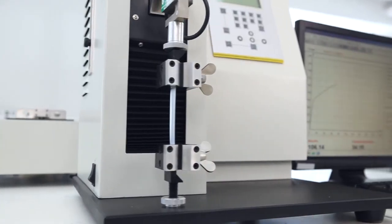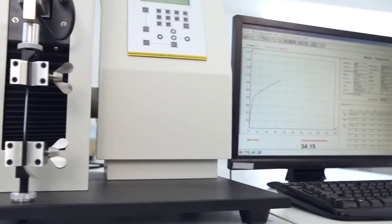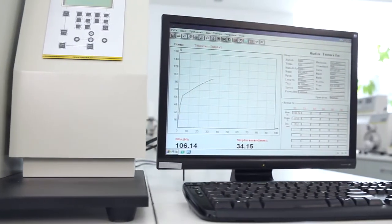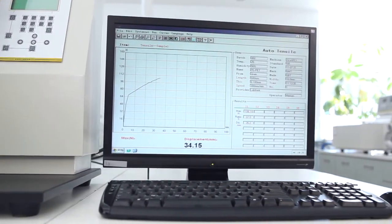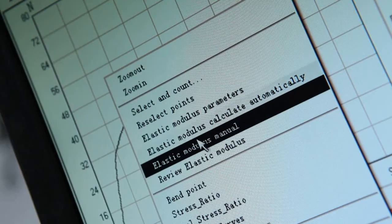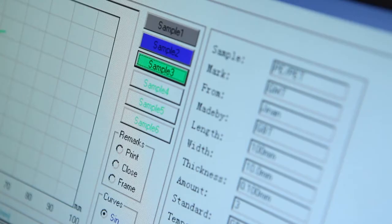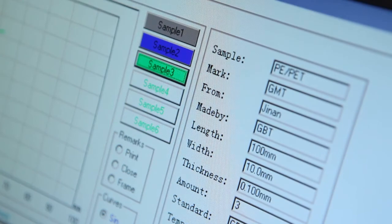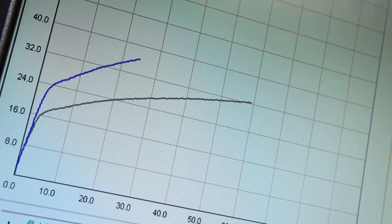The testing software designed by LabThink has an intuitive operation interface, visual display of real-time data and graphs. It can calculate the tensile stress at a given elongation, elastic modulus, and stress strain, and carry out historical data comparison and curved superposition analysis.